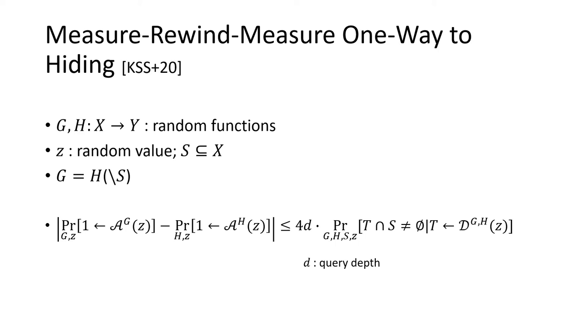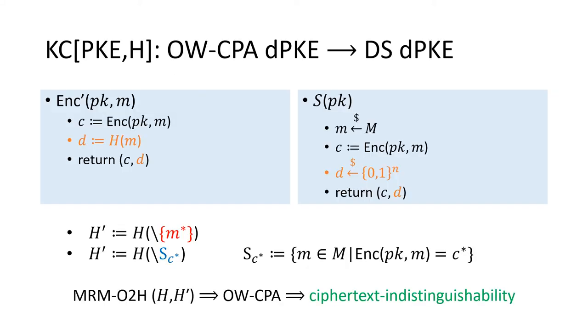Then, for any algorithm A with oracle access to g or h, there exists an algorithm B with oracle access to g and h such that the distinguishing advantage of A can be bounded by the probability that B outputs some elements in S.